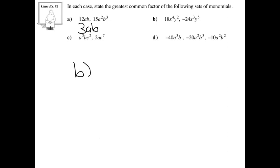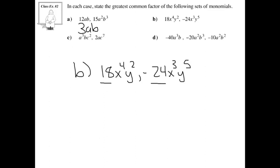For b, you have 18x⁴y² and negative 24x³y⁵. The greatest common factor between 18 and negative 24 will be 6. From there, let's take a look at x — we know there's x to the 4th and x to the 3rd, so there's at least an x to the 3rd. It'll be 6x³. And then with y, we have y² and y⁵ — at least there's going to be two y's. So your greatest common factor here will be 6x³y².